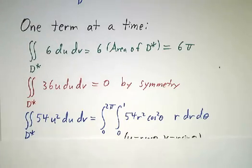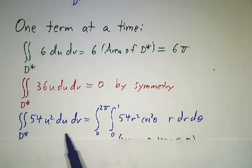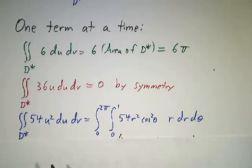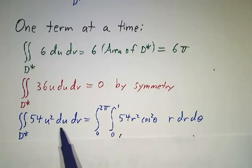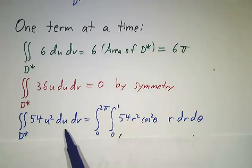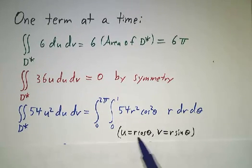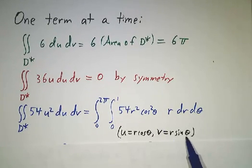And finally, the remaining term, the 9u squared times 6, well, we do another change of variables. We change from uv to r-theta. We use polar coordinates, not in the original xy space, but we use polar coordinates in uv space. That is, we let u be r cos theta and v be r sin theta.